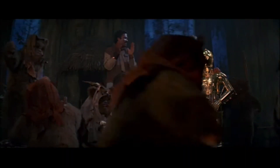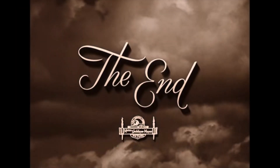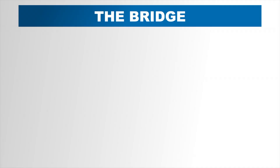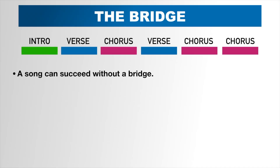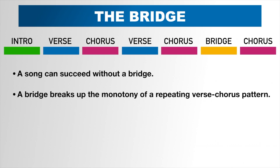Imagine a movie without a conflict or a problem that needs a solution — that would make for a pretty terrible story and a boring movie. Or how about a movie with a conflict but no resolution? A movie without conflict or resolution would leave the audience feeling uneasy and unsatisfied at the end. So what's the point of the bridge? If the verse-chorus combo is so effective, why do we even need that third element? Well, it's the reason why some songs don't even have a bridge at all. But if a bridge is there, it does a really good job of breaking up the monotony of what would otherwise be a boring and predictable verse-chorus pattern.